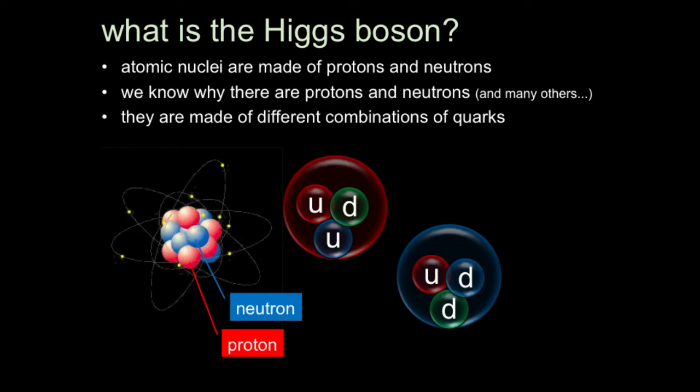We realize that the proton and the neutron are composed out of three smaller objects which can't be separated out. You can't observe these things in isolation, far away from other matter, but there's no doubt they're there — you can tell from other probes. These quarks are colored in this picture, and there are lots of technicalities of the theory which I can't go into here.